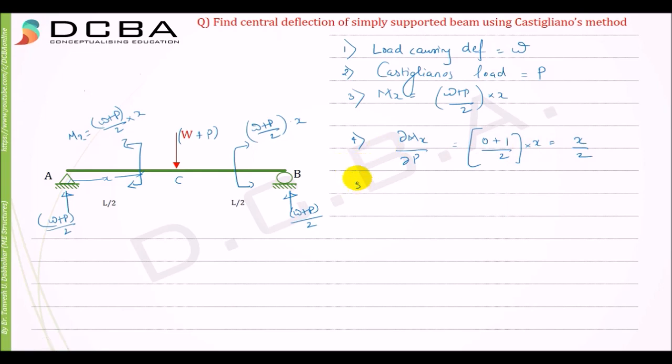And now we can find the deflection delta. Now X is going from 0, when X is equal to 0, and it has to travel till this point only, till this point only, because our moment equation is valid only till point C. So it has to travel a length of L by 2.